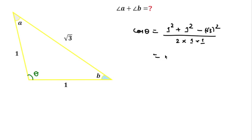So we can write 1 plus 1, 2, and this is 3 over 2, which is equal to minus 1 over 2. So we can say cos theta equal to minus 1 over 2, which is equal to